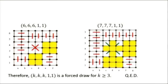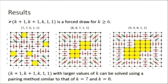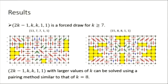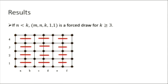So concluding the results, we have that the (k,k,k,1,1) game is a forced draw if k is larger than or equal to 3. Here are the other results we have obtained using similar methods by using the theorem to enumerate smaller values of k and then to produce a general pairing pattern for larger values. Here's another case we've worked on. And last, if n is smaller than k, then we also have this result stating that for k larger than or equal to 3, whites can manage a draw using only horizontal pairing.